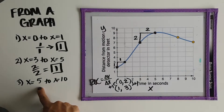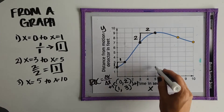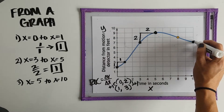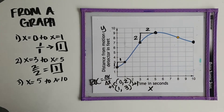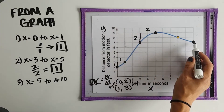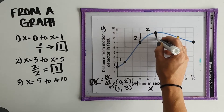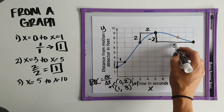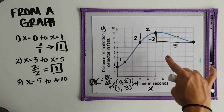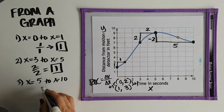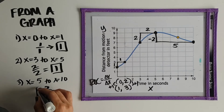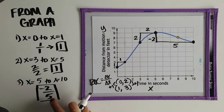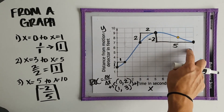From x equals 5 to x equals 10: when x is 5 we're at 9 feet, and when x is 10 we're at 7 feet. The change in y is negative 2 and the change in x is 5. So the rate of change for the interval 5 to 10 seconds is negative 2 over 5. That means distance goes down 2 feet over 5 seconds — I'm moving slower here than in the previous interval.